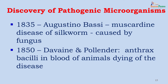However, microbes as pathogenic organisms had to wait some time before they were confirmed to be pathogens. In 1835, the first confirmed pathogen was the causative agent of a silkworm disease caused by a fungus, though it was not a human pathogen. The first human pathogen confirmed to be caused by a bacterium was the anthrax bacillus, seen in the blood of animals dying of the disease.